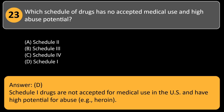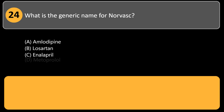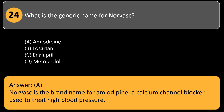What is the generic name for Norvasc? A) amlodipine, B) losartan, C) enalapril, D) metoprolol. Answer: A. Norvasc is the brand name for amlodipine, a calcium channel blocker used to treat high blood pressure.